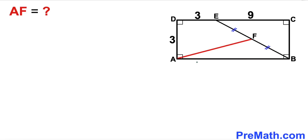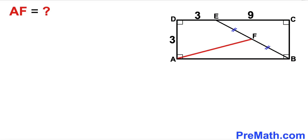Welcome to pre-math. In this video we have got rectangle ABCD such that point F is the midpoint of line segment EB. Moreover, line segment DE is 3 units, line segment EC is 9 units, and side AD is 3 units as well. Now we are going to calculate the distance AF.